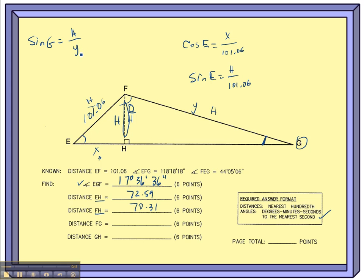When the variable is on the bottom, which you're trying to find, remember the shortcut is just to switch those things out. So Y is equal to H divided by the sine of G.